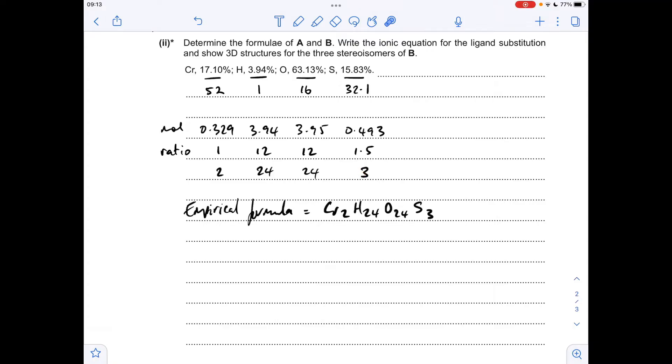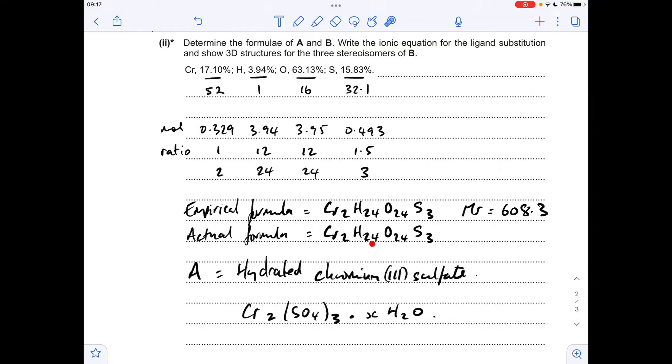So the empirical formula is Cr2 H24 O24 S3. So we'll just work out the MR of that, which comes out at 608.3, which is the MR quoted in the question. So we don't need to multiply this out, that's also the formula for the complex. Looking at the non-metal atoms that we've got in the compound, H, O, and S, it's likely this is going to be a hydrated chromium 3 sulfate, because of the presence of S and O. And if we look at the hydrogen count, we've got 24 hydrogens, so the X must be 12.